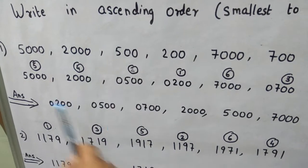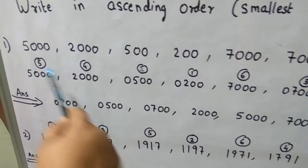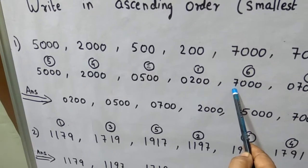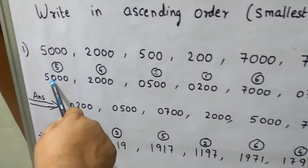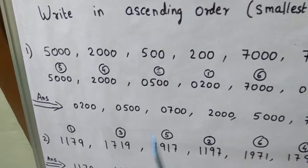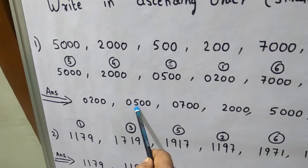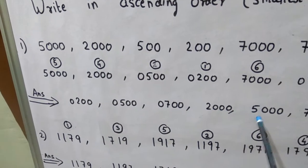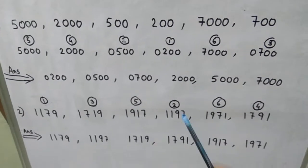Now we go to the 4-digit numbers. The 1000s place values are: 5 for 5000, 2 for 2000, and 7 for 7000. Which is smallest? 2 — so 2000 gets rank 4. Then 5000 gets rank 5, and 7000 gets rank 6. Now rearrange the numbers: 200, 500, 700, 2000, 5000, 7000. Hope you have understood.